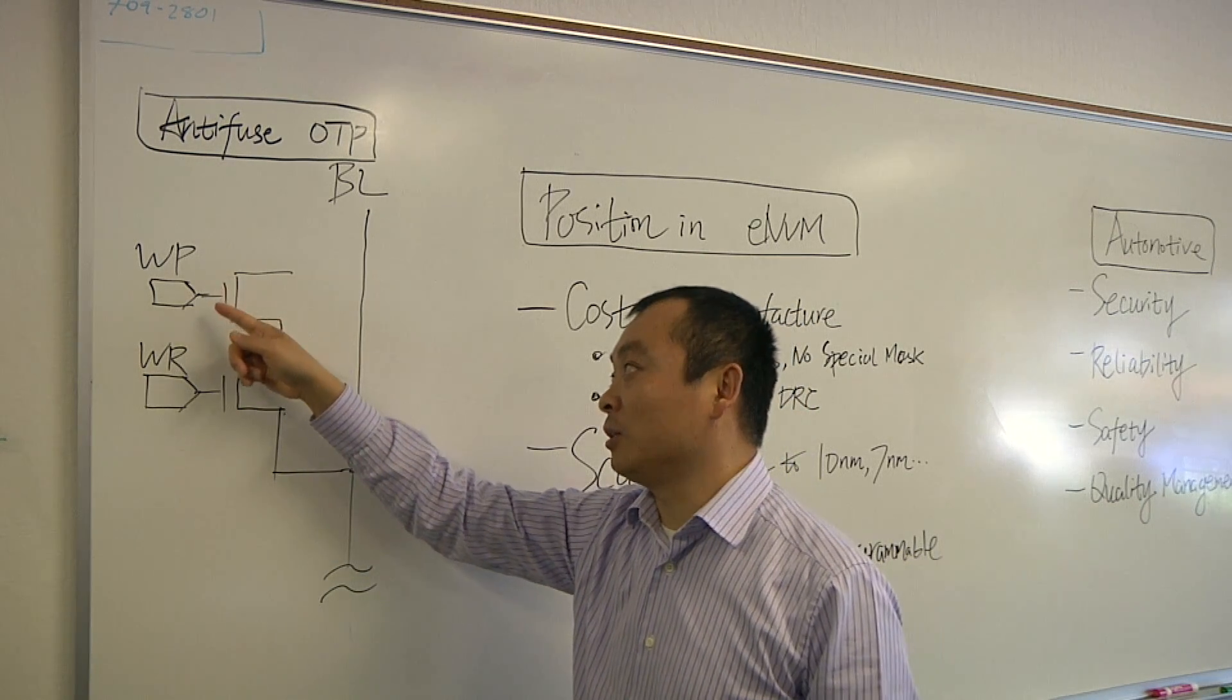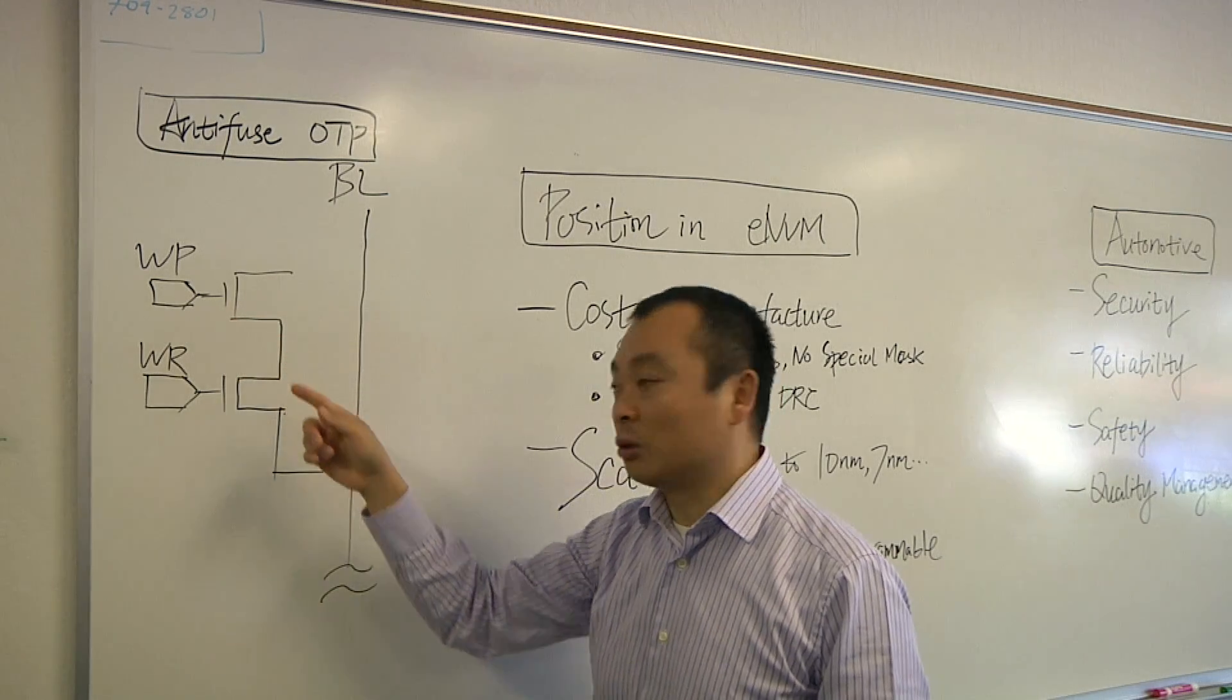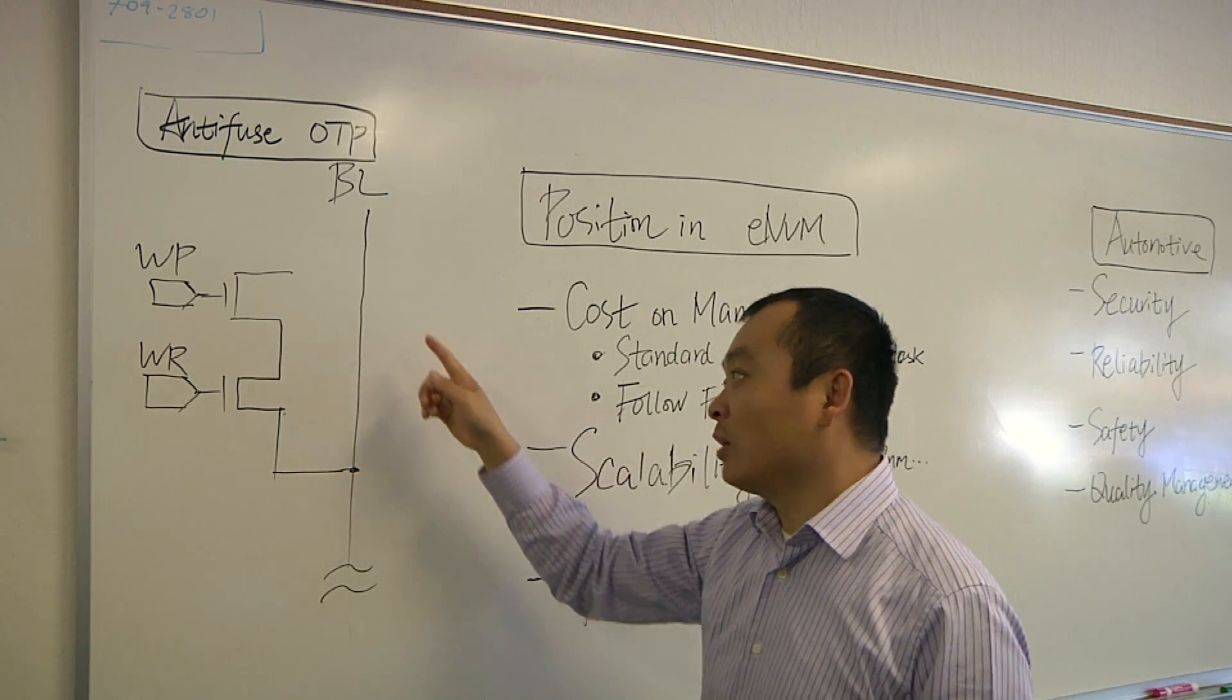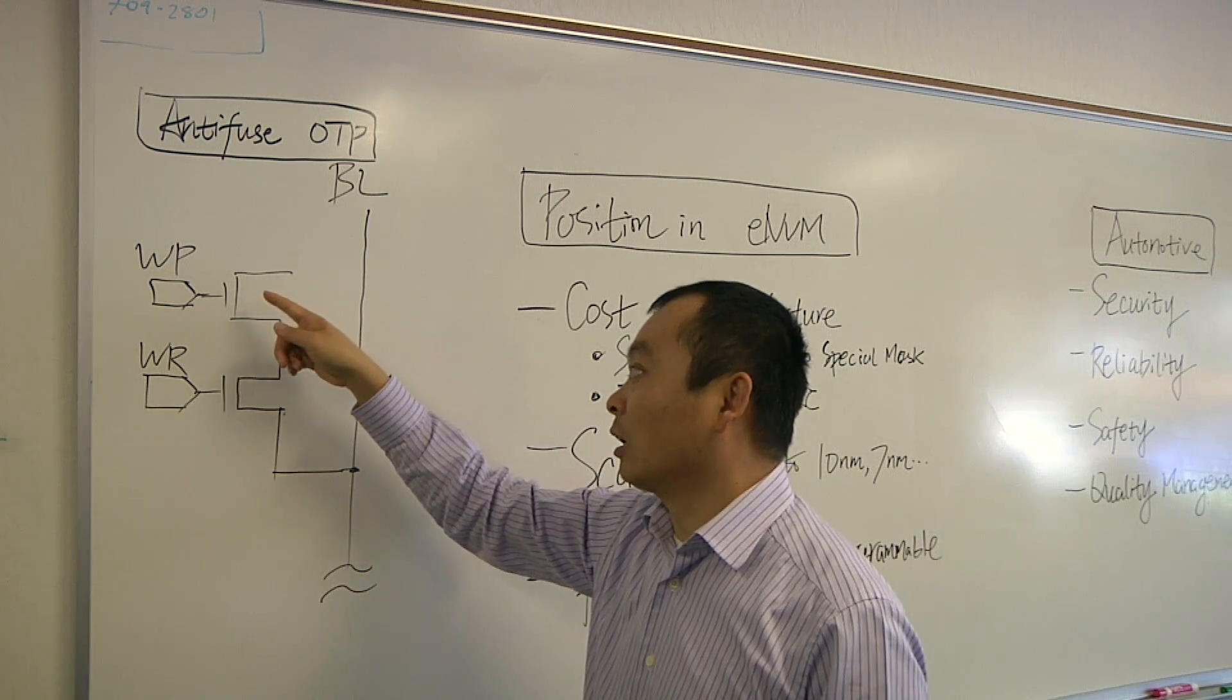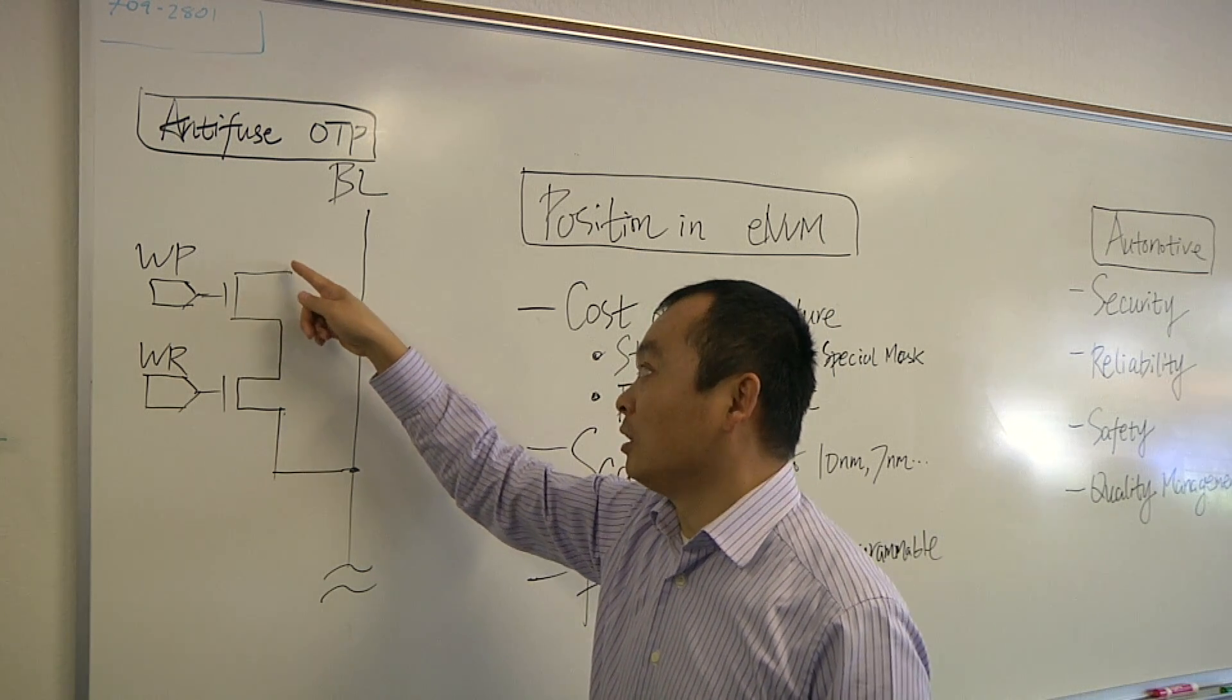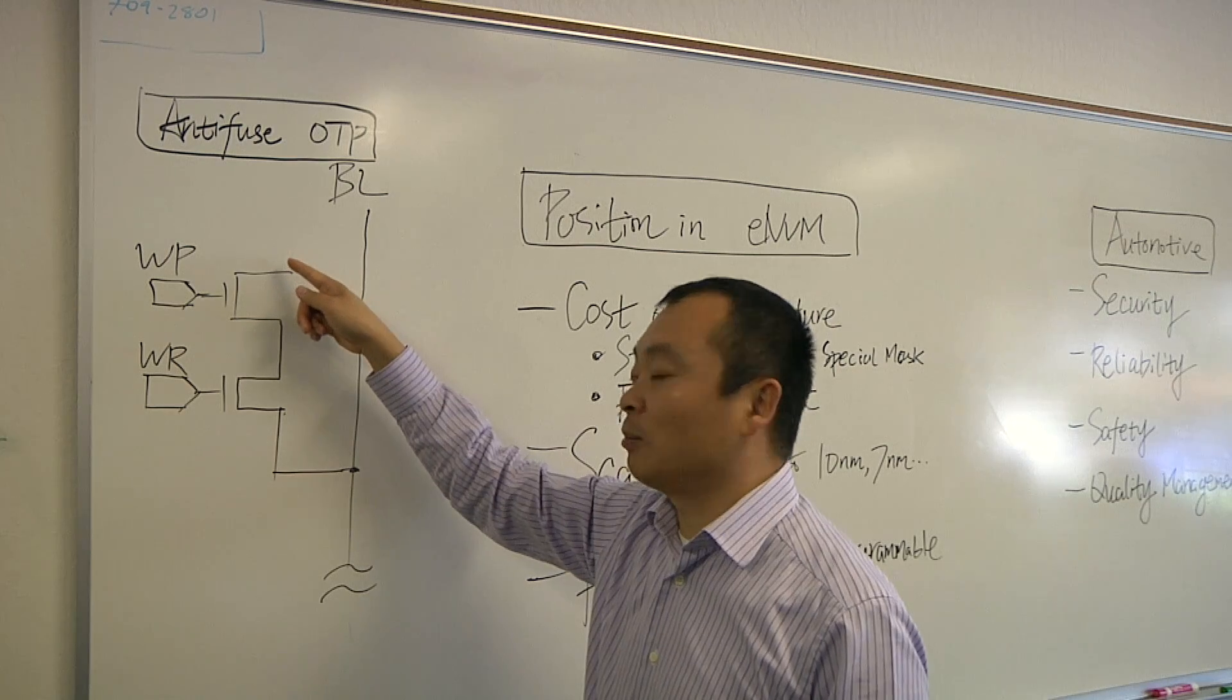And the other we call WP, means a programming transistor. So when the cell is, when the bit is not programmed, then it is like a capacitor here, because the gate, the drain side of the WP is floating.